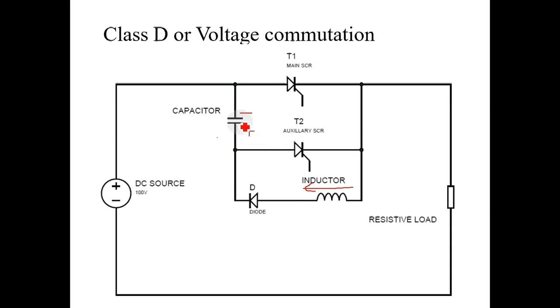When you fire auxiliary SCR T2, the whole capacitor voltage will appear across the main SCR. As you can see, upper plate of a capacitor is negative and lower plate is positive.